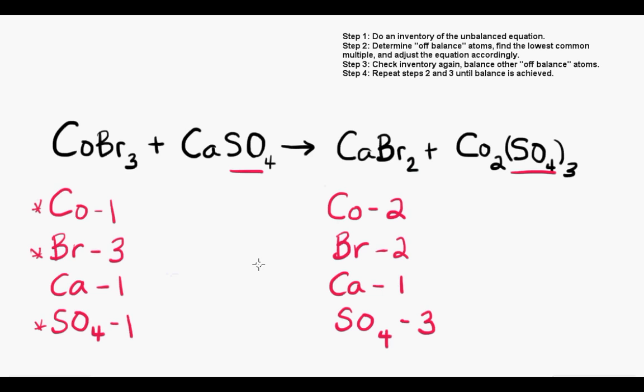If we follow that rule here, then definitely cobalt-3 sulfate is the most complex because it has both subscripts as well as brackets. More specifically, the sulfate group in this compound holds the most complexity. So let's start by balancing sulfate.